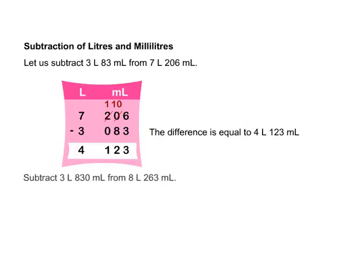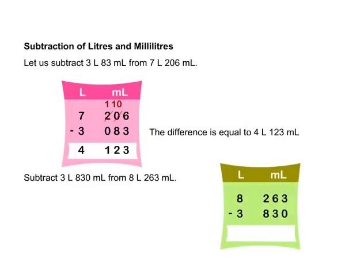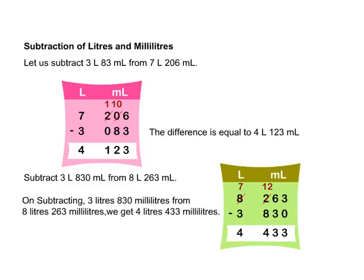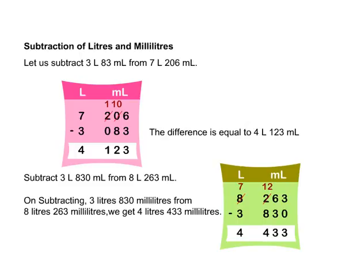Let us take one more example. Subtract 3 liters 830 milliliters from 8 liters 263 milliliters. Arrange the numbers in columns and decompose and subtract like ordinary numbers. On subtracting 3 liters 830 milliliters from 8 liters 263 milliliters, we get 4 liters 433 milliliters.